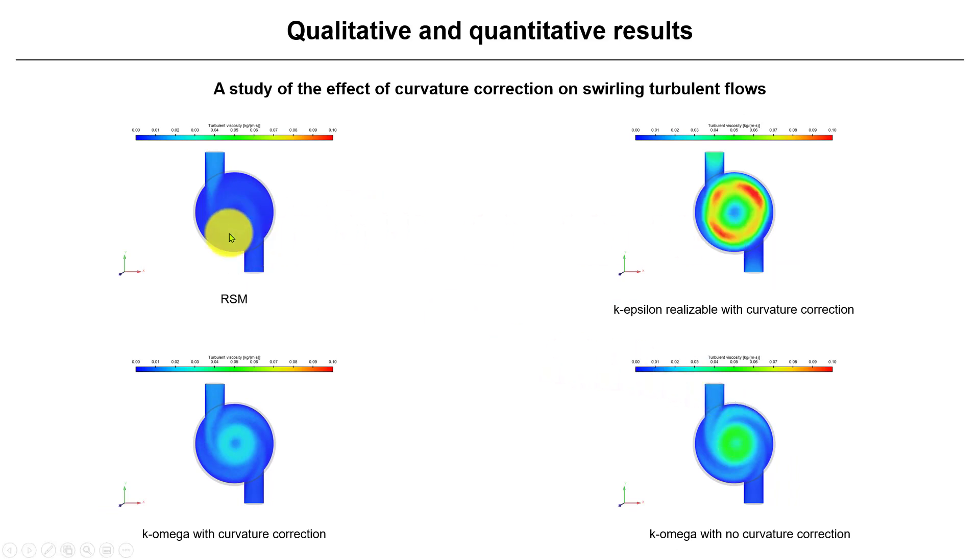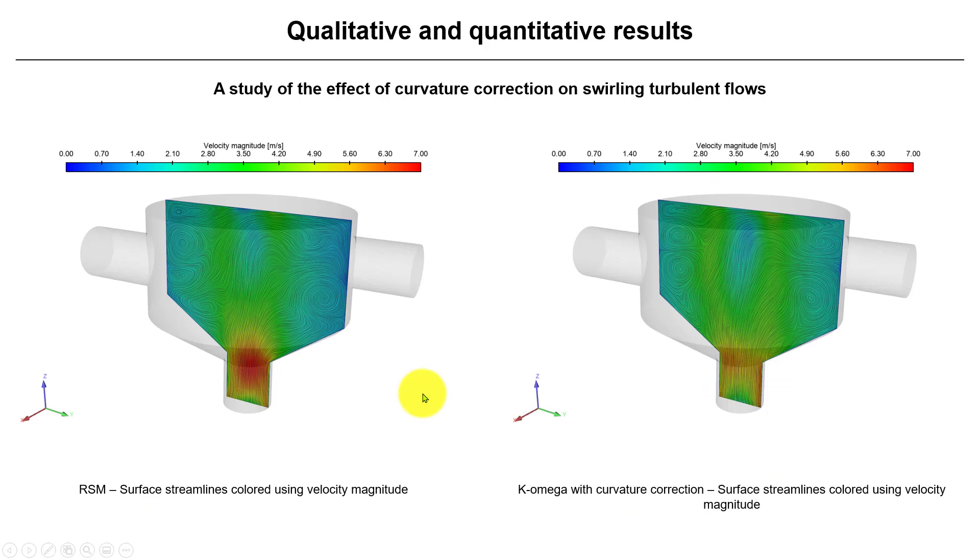And again, Reynolds stress models. So here we're fixing now the scale to the same values, and see that the Reynolds stress produced turbulent viscosity is highly anisotropic. So different models, different behaviors.